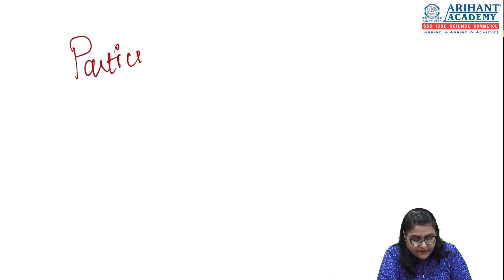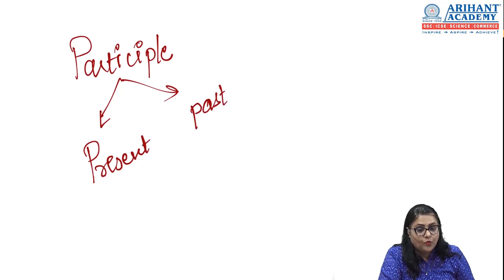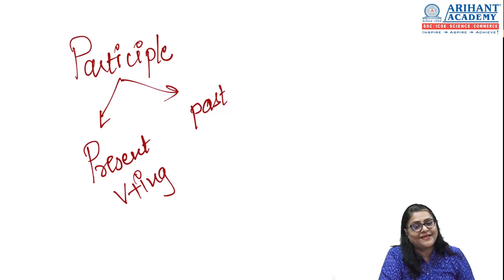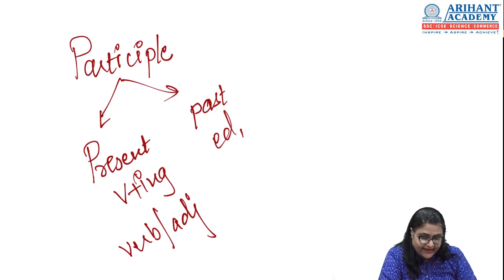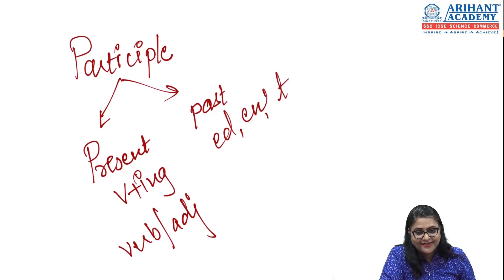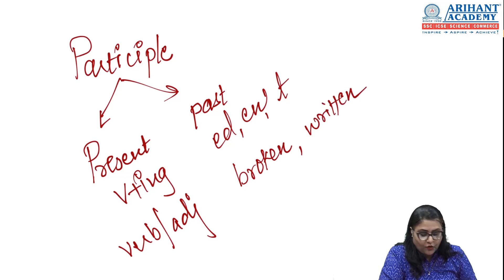The second non-finite verb is a participle, which is of two types. A present participle is verb plus '-ing' — coming, going, running, walking — and it acts like a verb or adjective. A past participle is the third form of the verb, ending with -ed, -en, or -t most of the time. For example: broken, written — these are past participles.